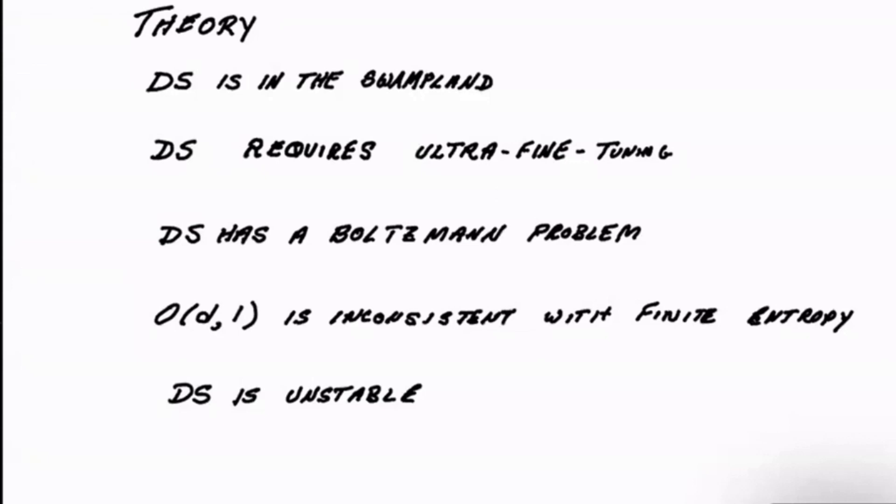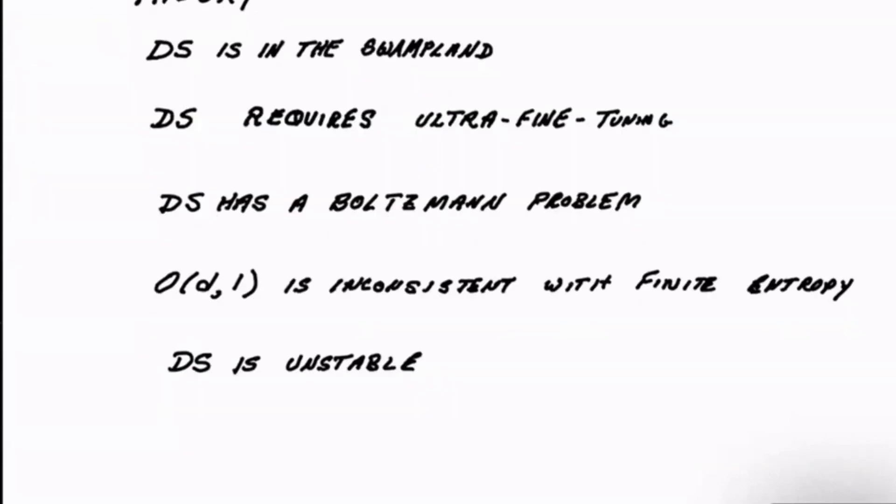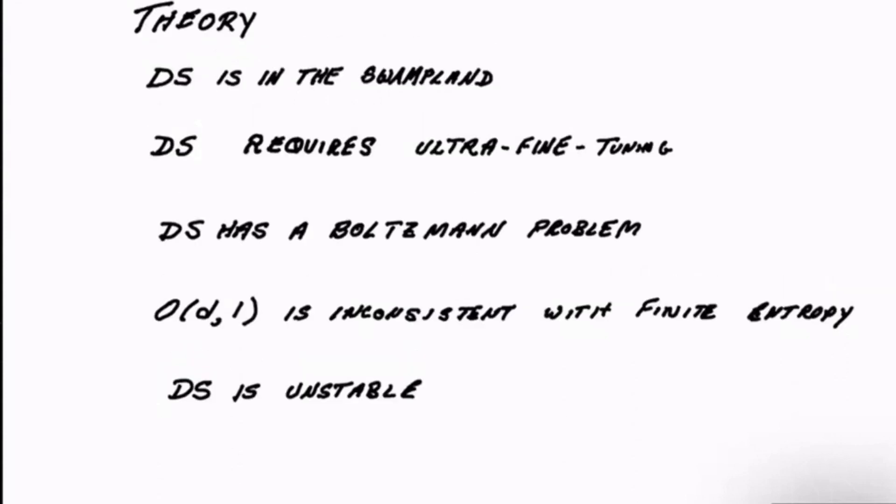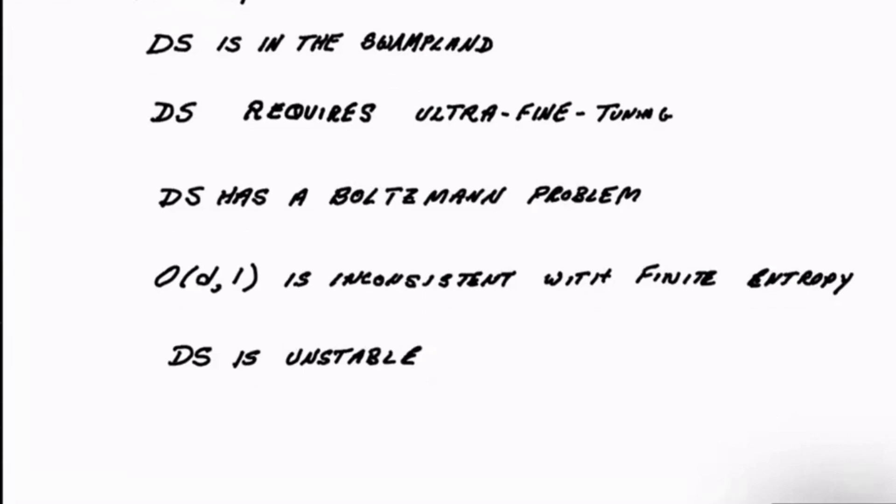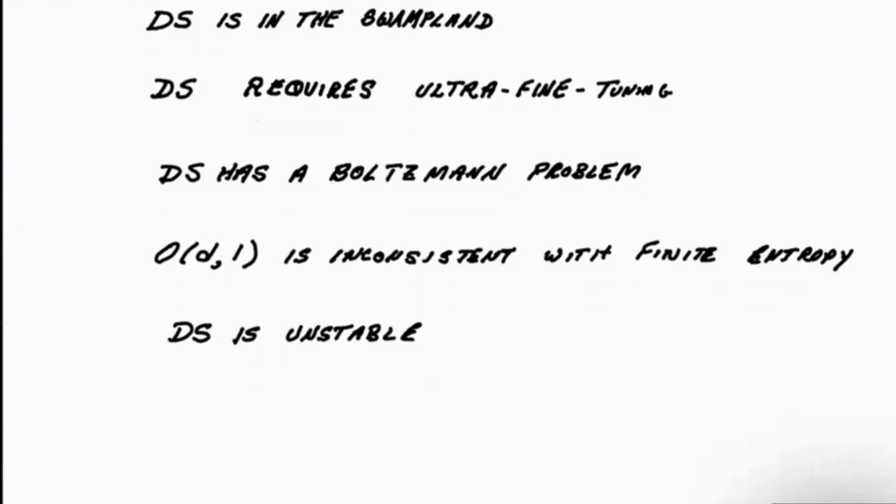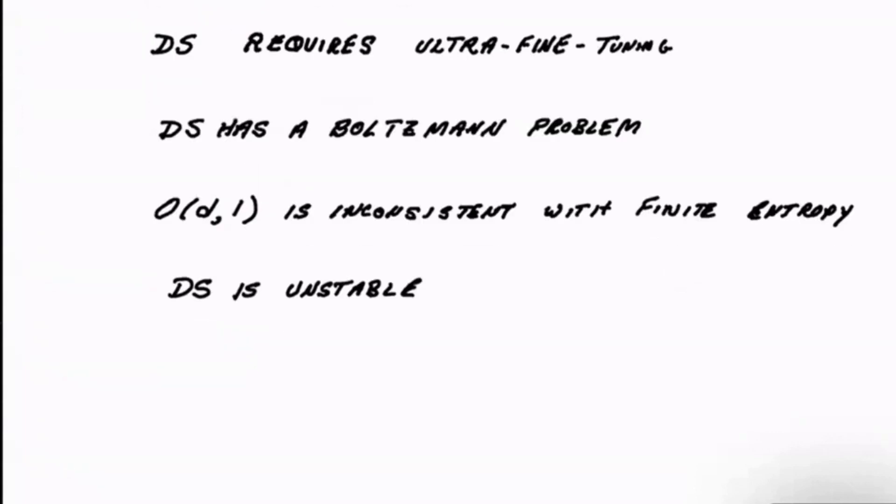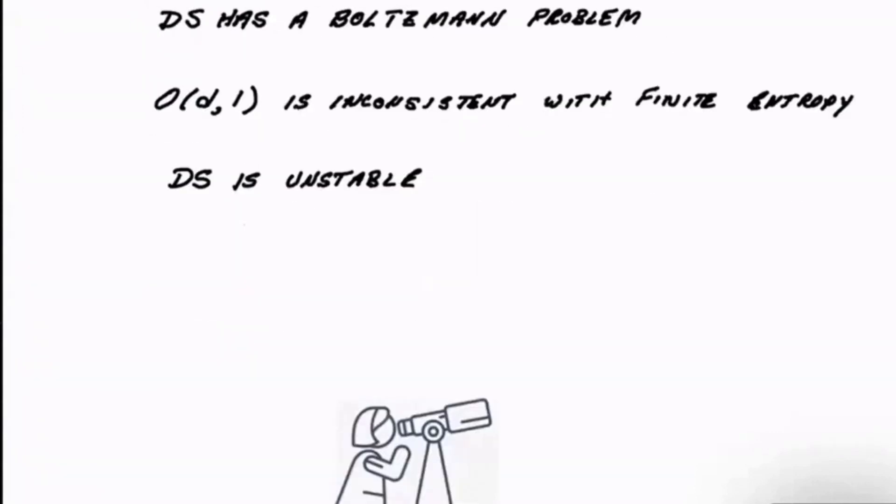Okay, the de Sitter space. There's lots of opinion out there by theoretical physicists about what de Sitter space is or isn't. De Sitter space is in the swampland. De Sitter space requires ultra-fine tuning. De Sitter space has a Boltzmann problem, whatever a Boltzmann problem is. The symmetry of de Sitter space, OD1, is inconsistent with finite entropy. De Sitter space is unstable.